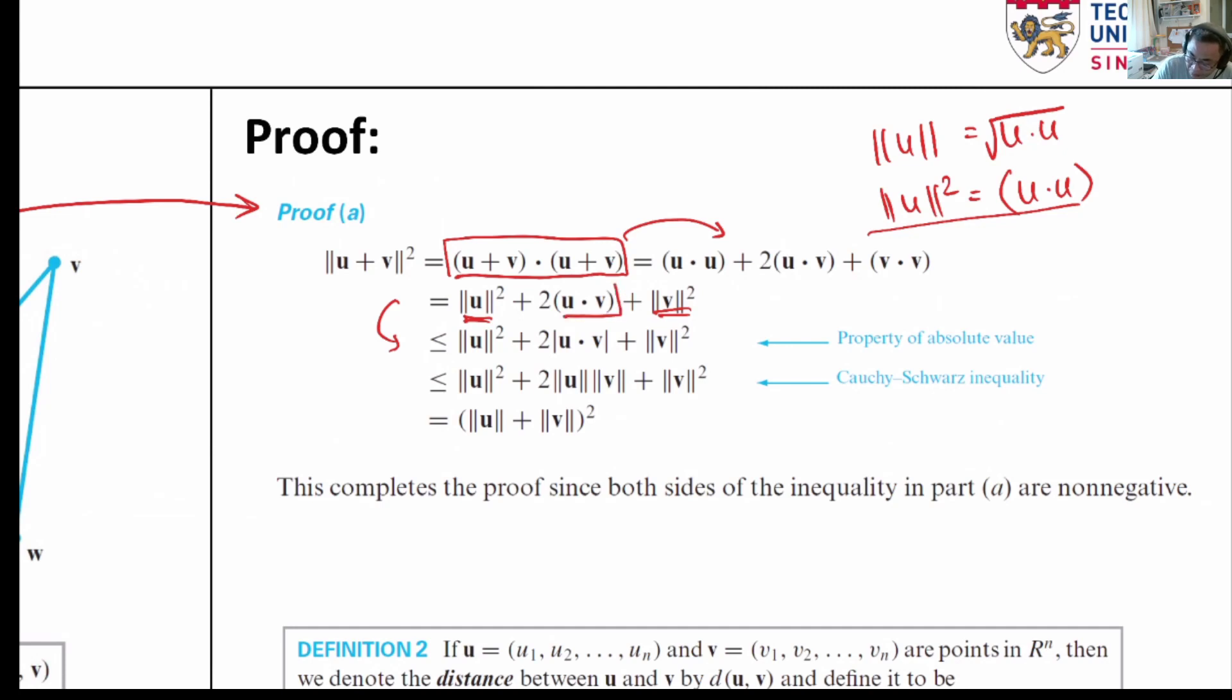And now we continue the next equation. Since u dot v can be a positive value or a negative value, by taking the absolute value of u dot v what we are saying is that this equation on the next line is definitely greater or equal to the previous line. And in the next line we apply Cauchy-Schwarz.